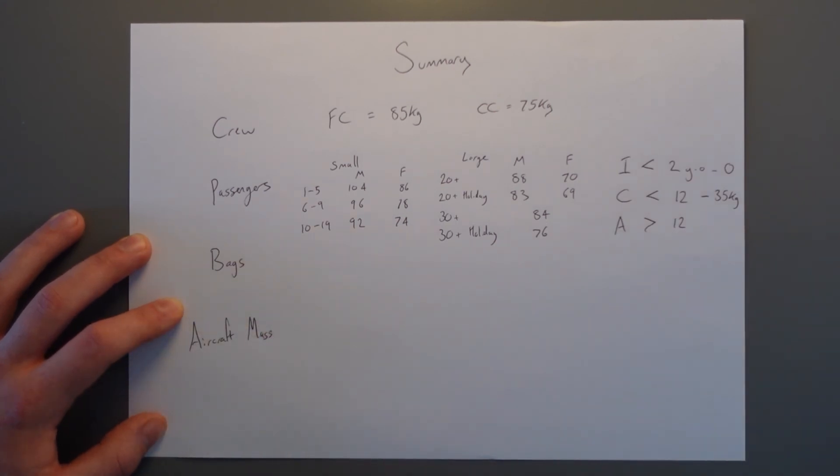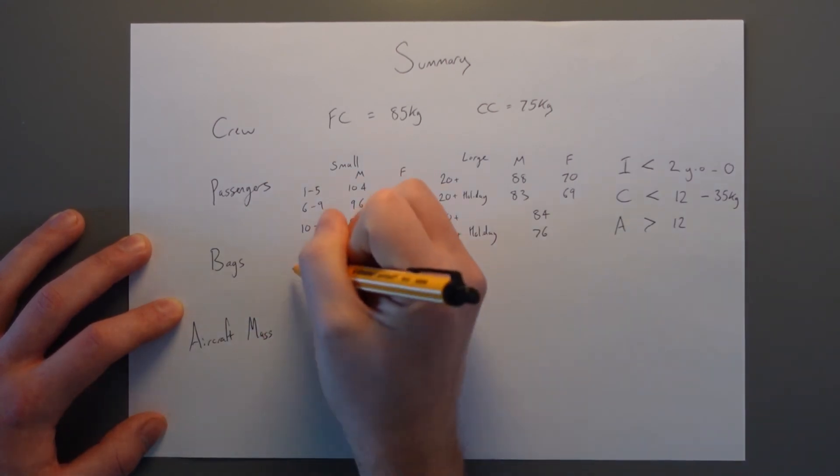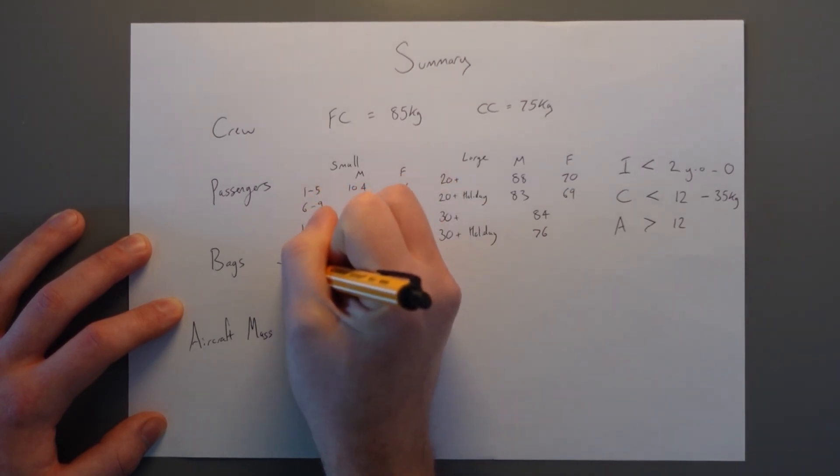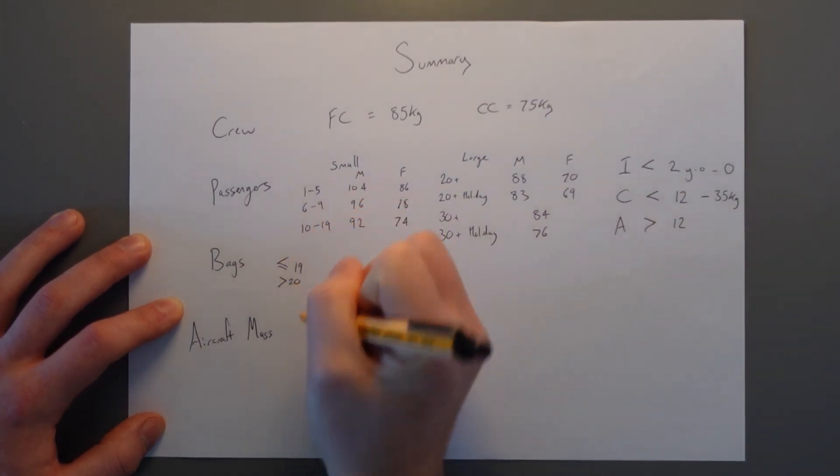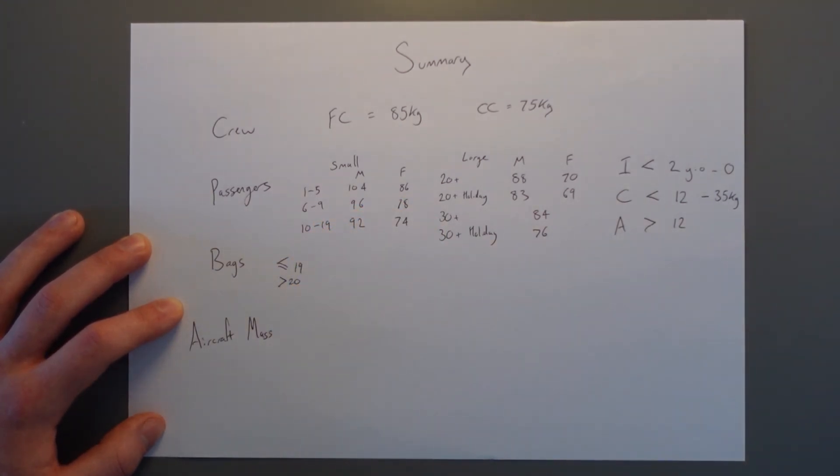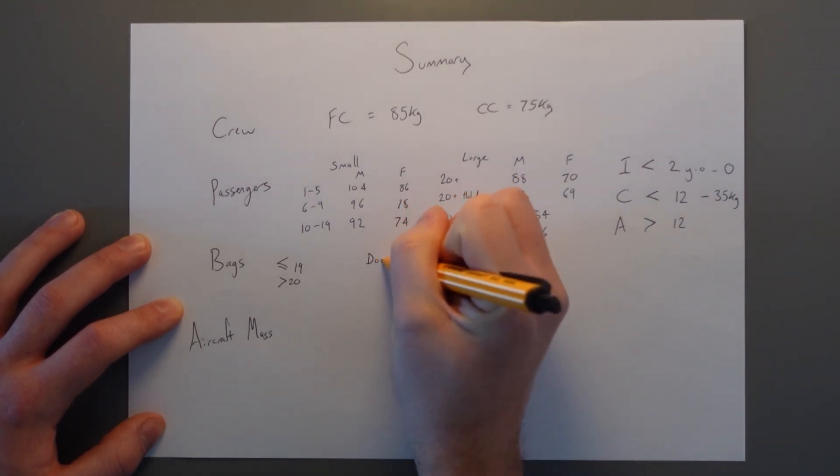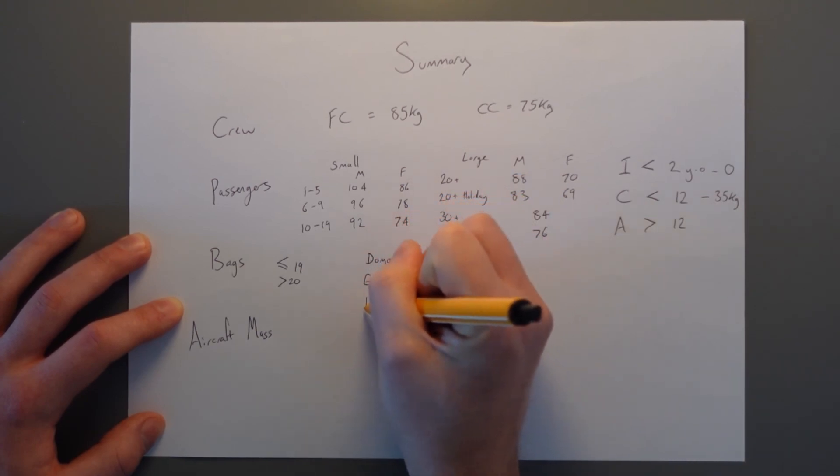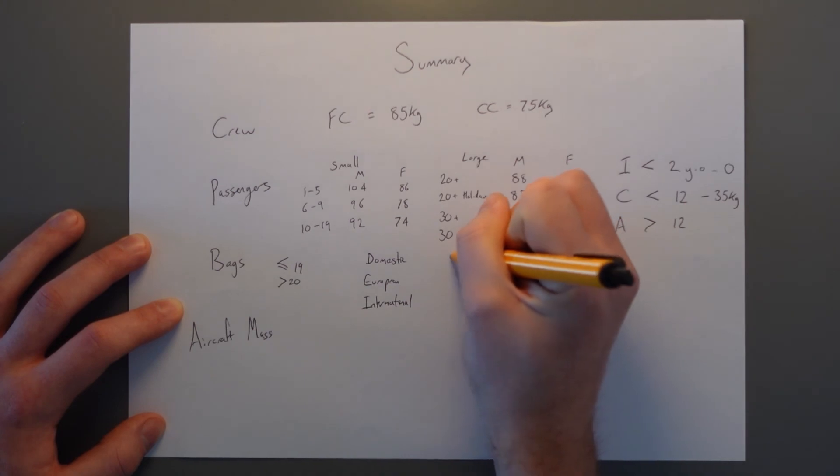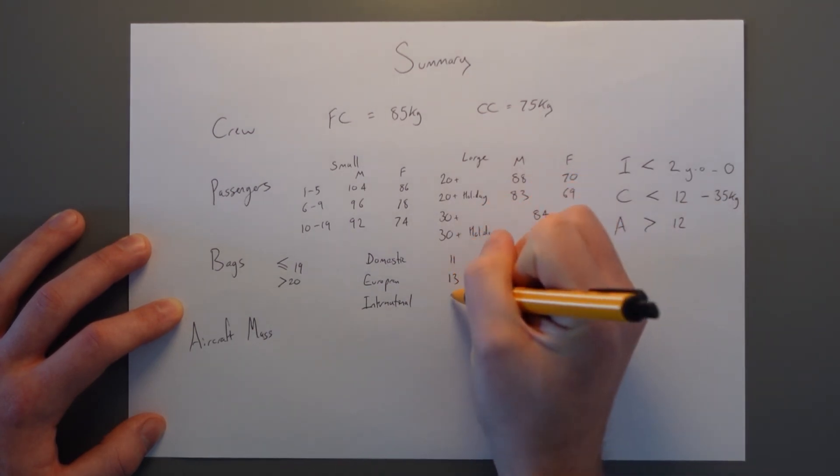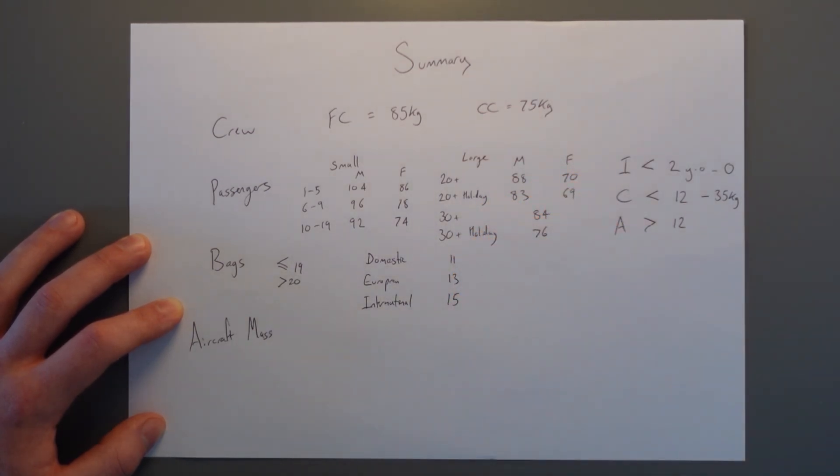Bags next. We have to weigh every bag if we have 19 or fewer seats. If we have 20 or more seats, we can use standard masses for the bags. If we're using standard masses, we break them down into domestic flights, European flights and intercontinental flights. For domestic, the standard mass is 11 kilograms, European is 13 and intercontinental is 15.